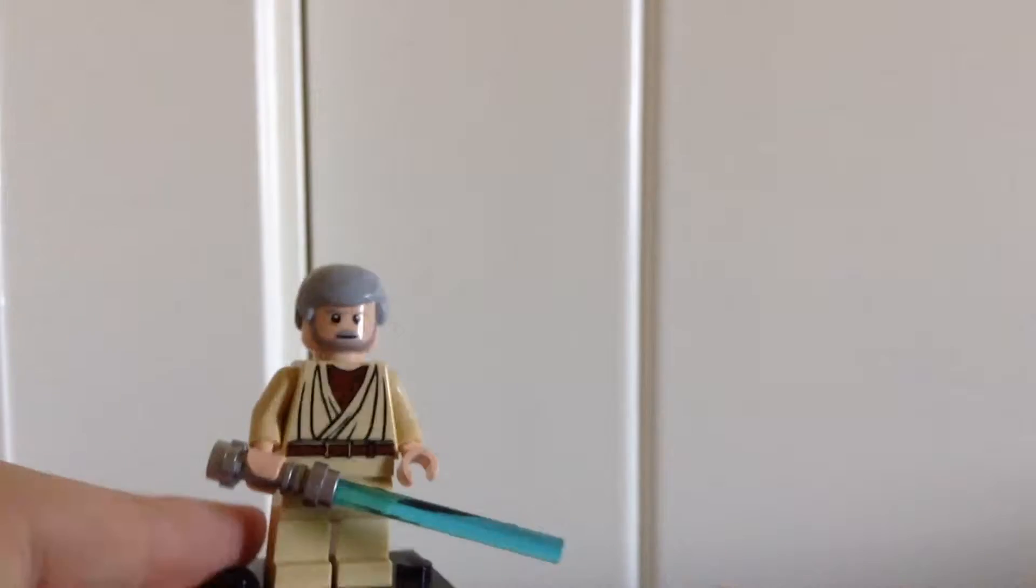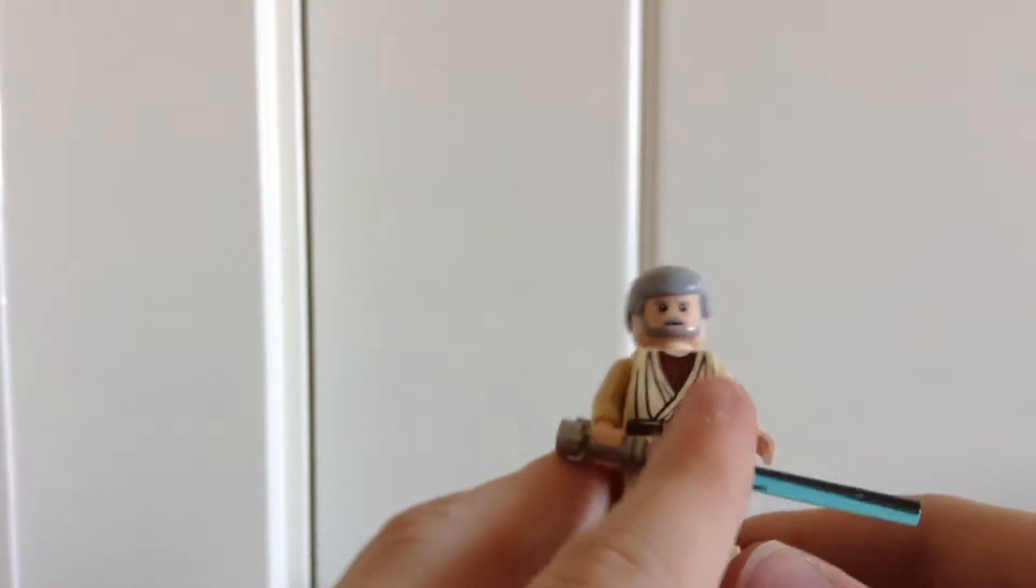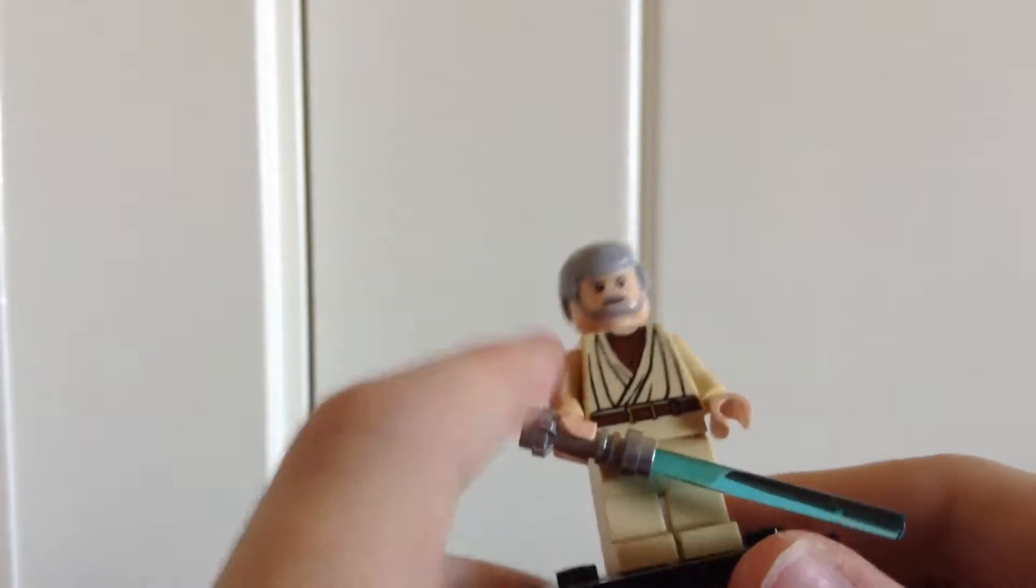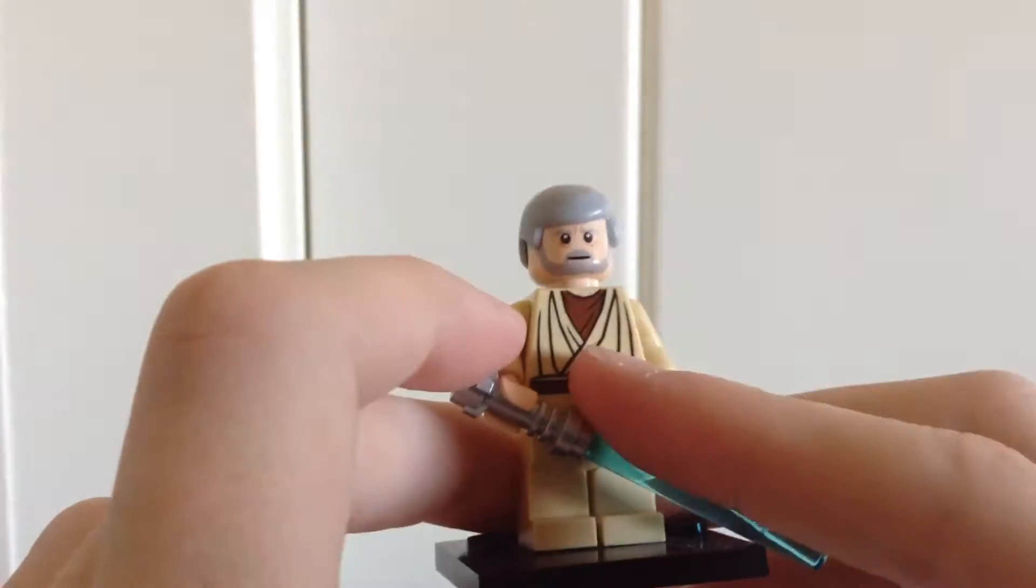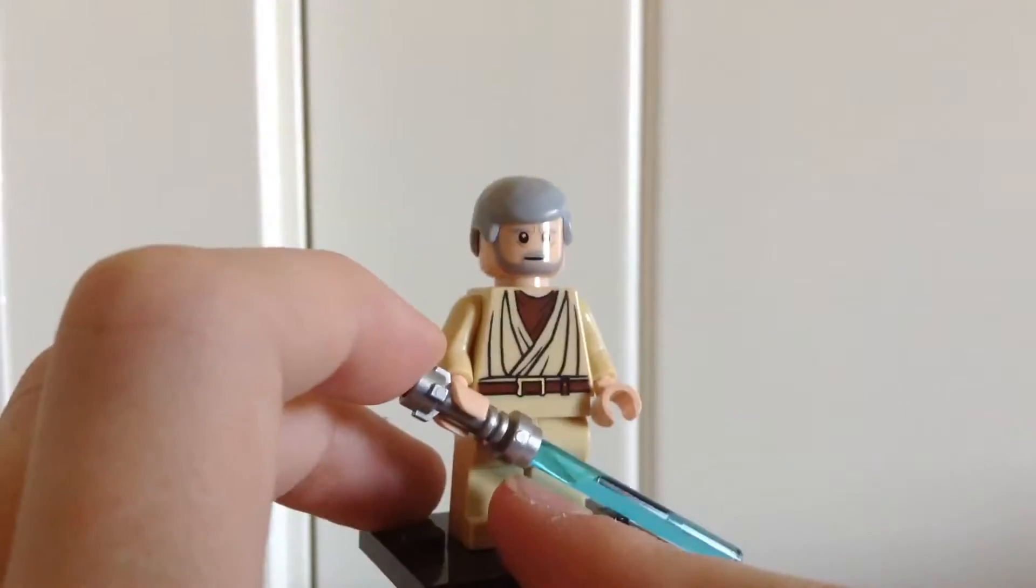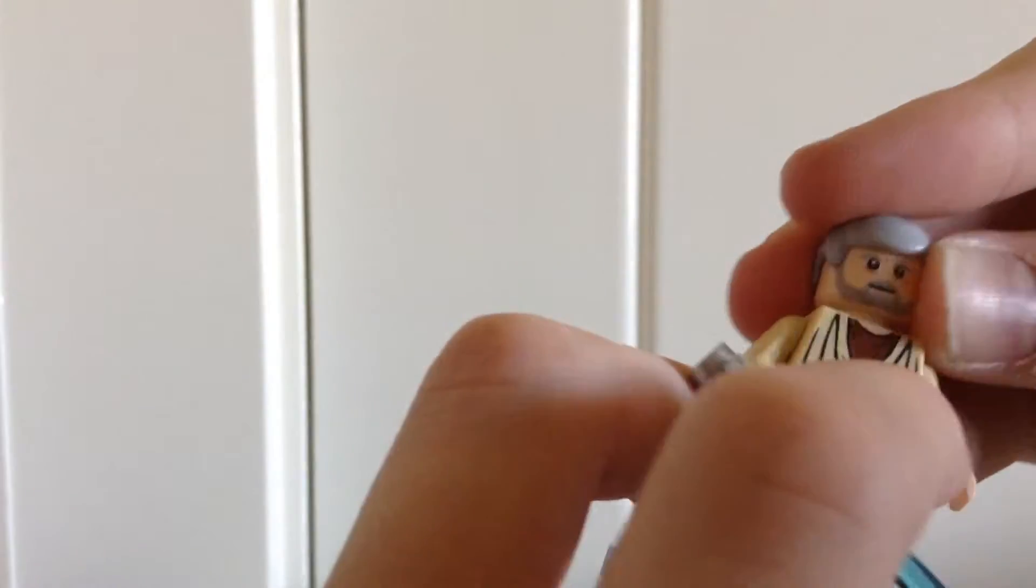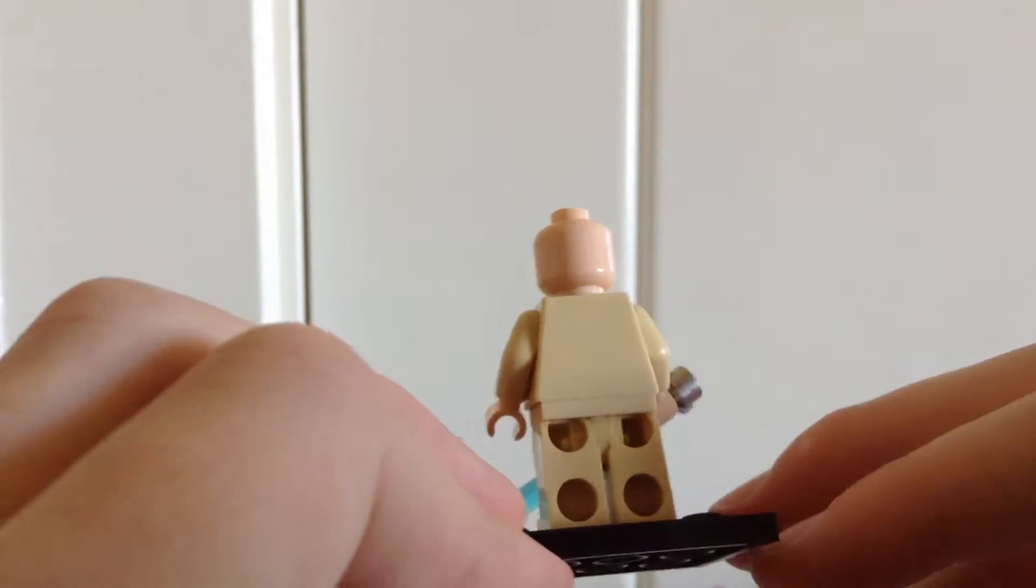So, let's go ahead and take a look at Obi-Wan Kenobi, or Ben Kenobi, whichever one you prefer to use. He also has his blue lightsaber. He has pretty nice printing on his torso, but he doesn't have leg printing either. There's just a better look at his first face. And again, no second face or any back printing.